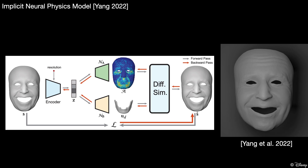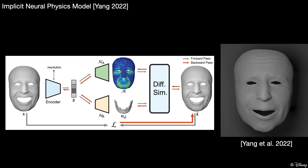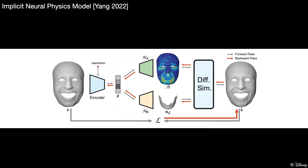Recently, Yang et al. introduced an implicit physical face model driven by expression inputs. However, this model, designed for a single identity, overlooks an important aspect of human expression: individual style. Building a separate network for each identity ignores the fact that individuals share many common muscle structures.